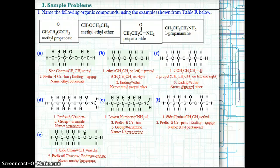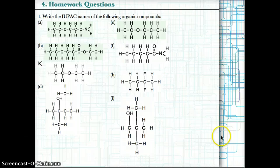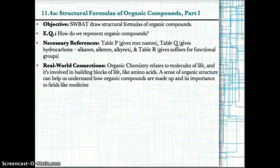Here are some sample problems you can try on your own — please also complete the homework questions for tonight. Now I'll be moving on to the first part of 11.4A, structural formulas of organic compounds. For this lesson, please use table P for prefixes based on the number of carbons, table Q for hydrocarbons — alkanes, alkenes, and alkynes — and table R for suffixes for functional groups.